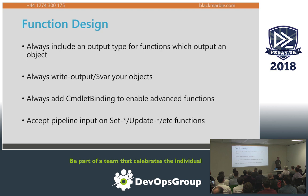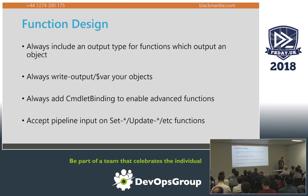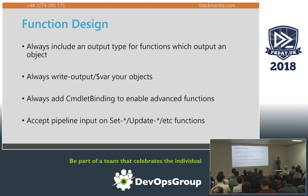Use Write-Output or output your variable so things go into the pipeline. Avoid using Return — it does interesting things outside of classes and doesn't always do what programmers think it does. Use CmdletBinding — there are very few cases where you want a non-advanced function. CmdletBinding makes life so much simpler: if you put -Verbose in, it will echo all the way down through every single command you run within that function.